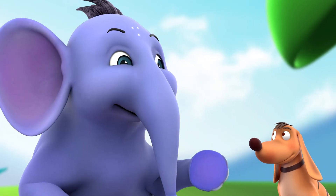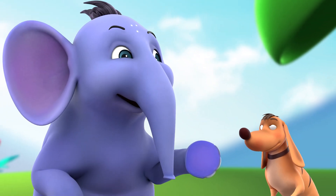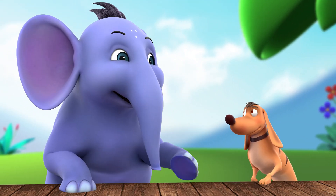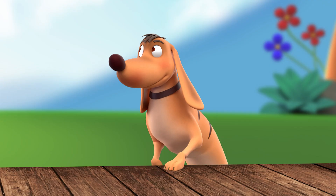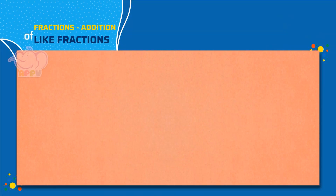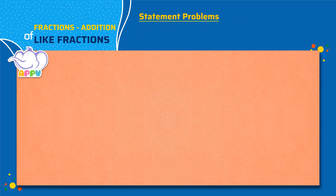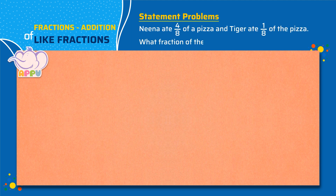Moving on to our next challenge: Statement Problems. Nina ate 4 by 8 of a pizza and Tiger ate 1 by 8 of the pizza. What fraction of the pizza did they eat all together?